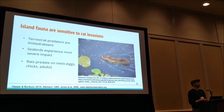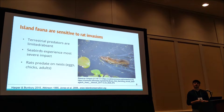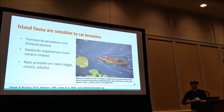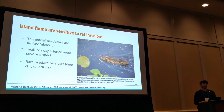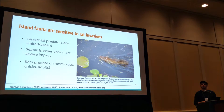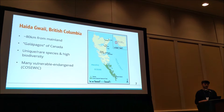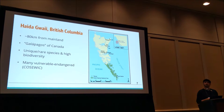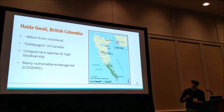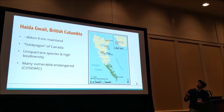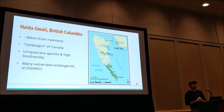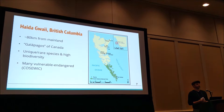The rats will come in and actually eat the eggs, they can eat chicks, and in some cases they can eat the adult birds. It's important to note the sensitivity of islands, as rats are actually found in over 80% of islands worldwide. And this includes Haida Gwai, which is an isolated archipelago off the central coast of British Columbia.